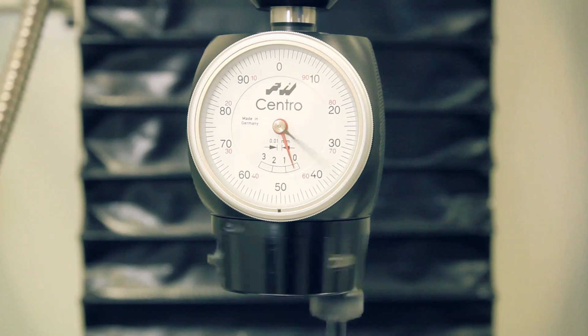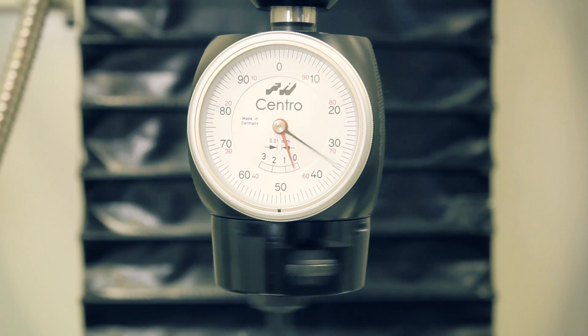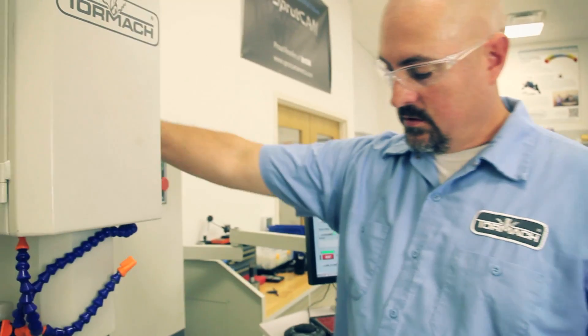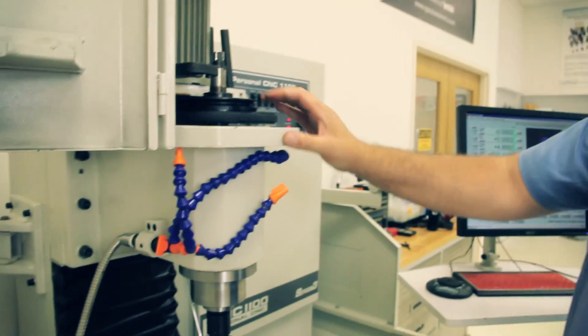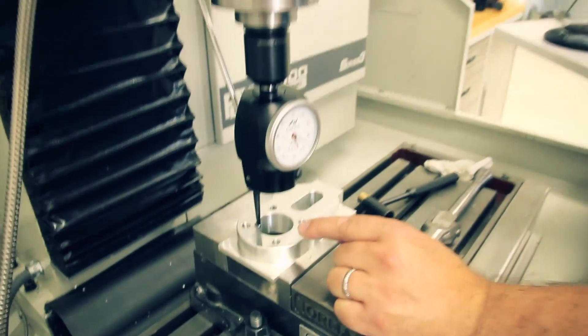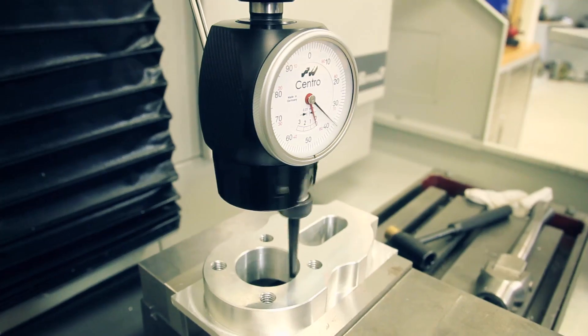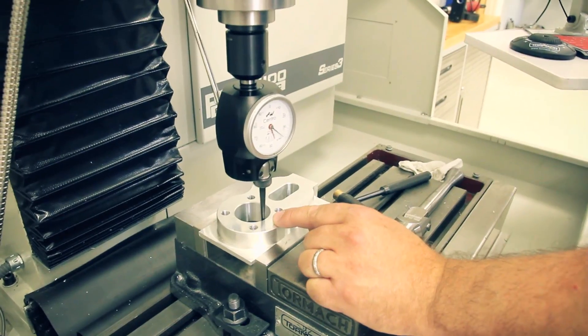The indicator face itself between each line segment is a hundredth of a millimeter, .01 millimeter. So you're talking a very fine movement. Even with the indicator bouncing here a little bit, it's dialed in. If you wanted to go real slow, you could spin it by hand. Check it on the X. Check it in the Y.